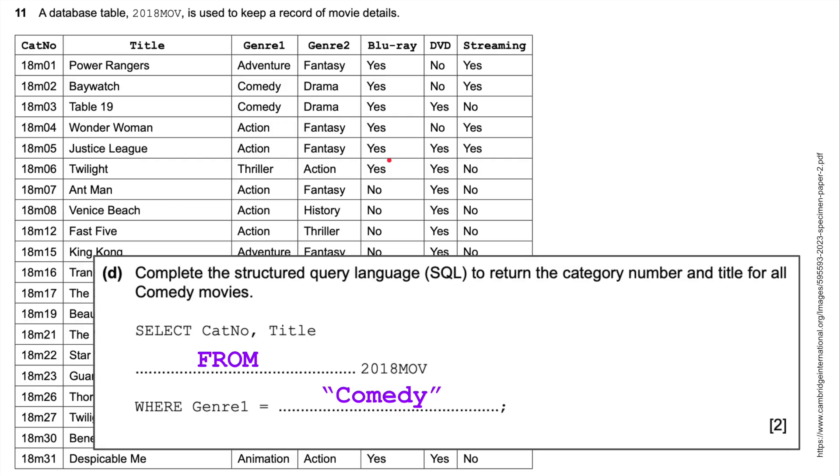And then we've got a little bit of SQL. Very simple SQL. Complete the structured query language SQL to return the category number and the title for all comedy movies. So we're going to select cat number and title. We're going to select those two things from this table. From this table where the genre equals, and it's asking for comedy movies. So where the genre equals comedy. We put the comedy, we put these things that are in each cell, we put these entities in quote marks to show that they are actual entities that live inside the table.